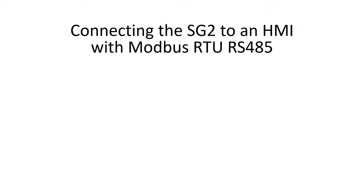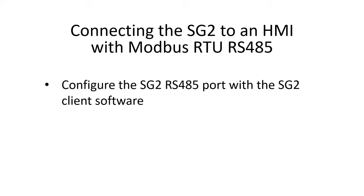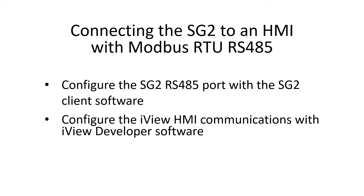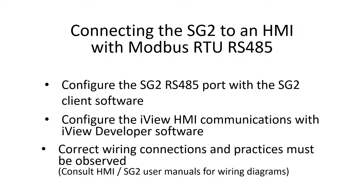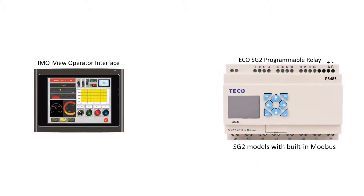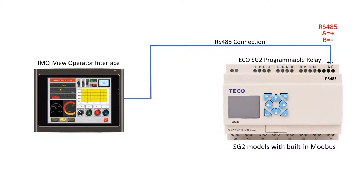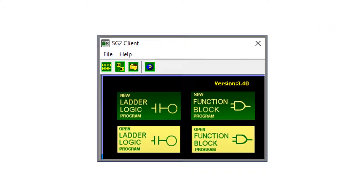When connecting the SG-2 and HMI using Modbus RS-485, the SG-2 RS-485 port and iView HMI must be configured for communication. Correct wiring connections and practices must be observed. In this example we are using a TECO SG-2 and iView operator interface. The electrical connection is RS-485.